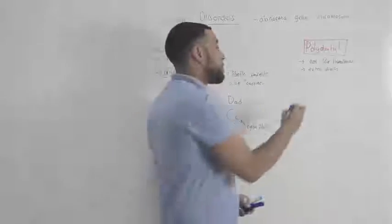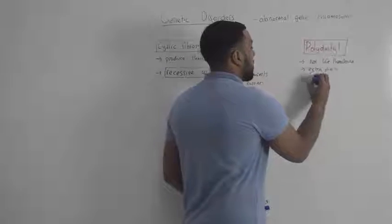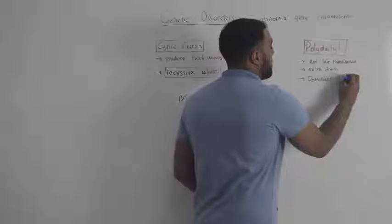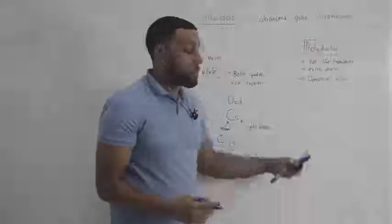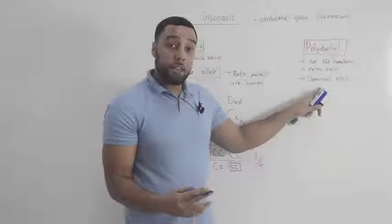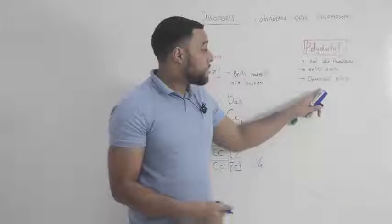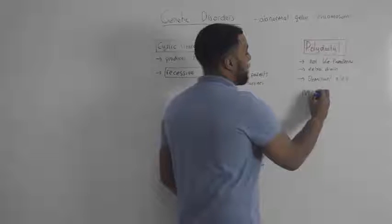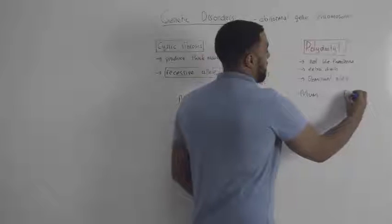Polydactyl is caused by the dominant allele, which means only one of your parents needs to have the allele for you to have the disease. So I'll do another genetic diagram if we have a mother and a father.